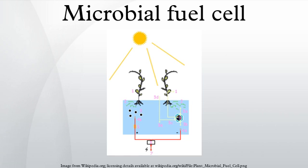Electrons are transferred to the cathode compartment through an external electric circuit, while protons are transferred to the cathode compartment through the membrane. Electrons and protons are consumed in the cathode compartment, combining with oxygen to form water.